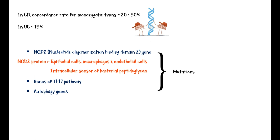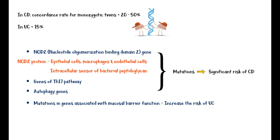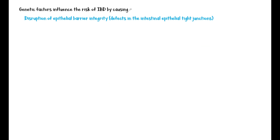Mutations in these genes lead to a significant risk of developing Crohn's disease, while mutations in genes associated with mucosal barrier function increase the risk of ulcerative colitis. Moreover, mutations in HLA genes play a role in modifying the disease. Genetic factors influence IBD risk by causing disruption of epithelial barrier integrity, mainly due to defects in intestinal epithelial tight junctions, deficits in autophagy, and deficiencies in innate pattern recognition receptors.